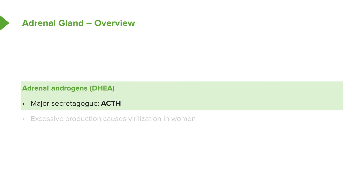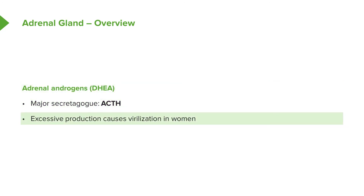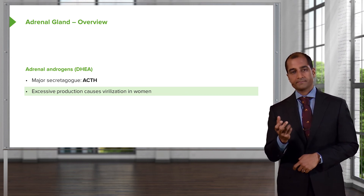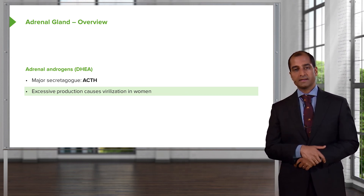In the reticularis, we have DHEA — dihydroepiandrosterone. As a general theme, androgens are produced here. The major secretagogue would be ACTH, and androstenedione is formed. If there is an enzyme deficiency causing increased activity of the reticularis, you get virilization of a female — excess acne, increased muscle mass, and most importantly, enlargement of the clitoris, known as clitoromegaly.